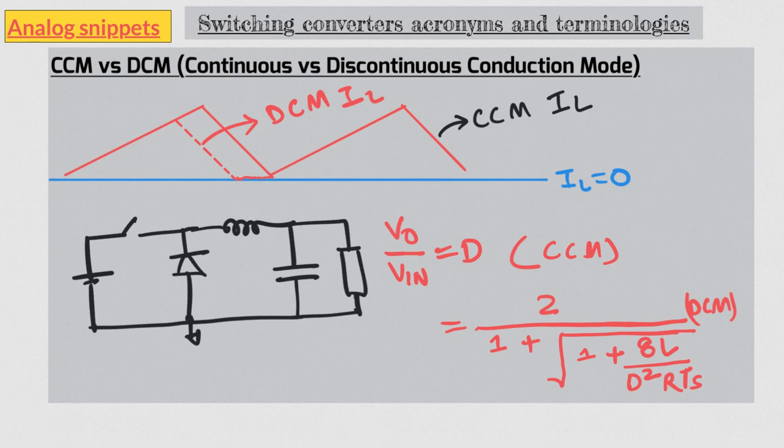The boundary between CCM and DCM when the valley current is exactly zero is also known as critical conduction mode or boundary conduction mode. So for asynchronous converters we don't really have a choice. At low load currents the converter will enter DCM. But for synchronous converters we do have a choice. There we may decide to never enter DCM. So let's see how that happens.